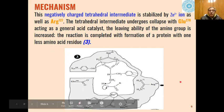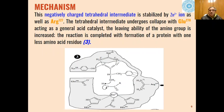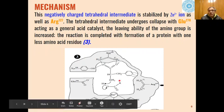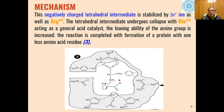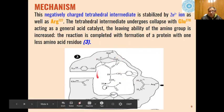In the next step, the negatively charged tetrahedral intermediate which has been formed is stabilized by Zn2+ ion as well as arginine. This will collapse with glutamic acid 270 acting as a general acid catalyst. The amino group will get separated and carboxylic acid group will get separated. This protein with one less amino acid residue is removed from the enzymatic pocket.